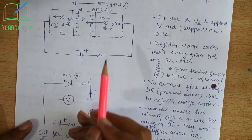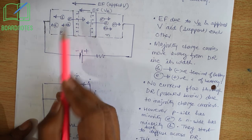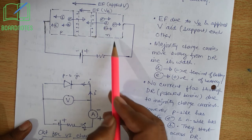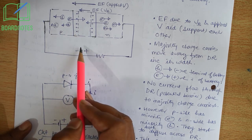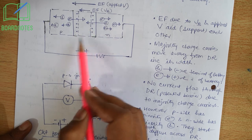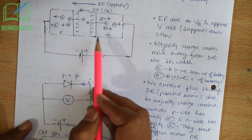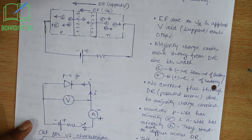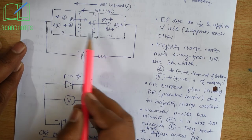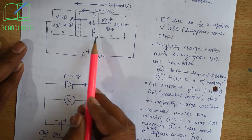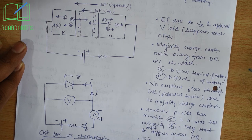However, there are minority charge carriers on p-side as well as on n-side. Electrons are minority charge carriers on p-side, whereas holes are minority charge carriers on n-side. Electrons start to drift through the depletion region and similarly holes also drift through it. This causes a very small current in the reverse direction, opposite to the p-n junction. This current is due to minority charge carriers and its magnitude is very small, measured in microamperes. This is called leakage current — very small in magnitude and opposite in direction.